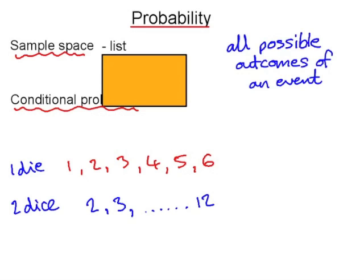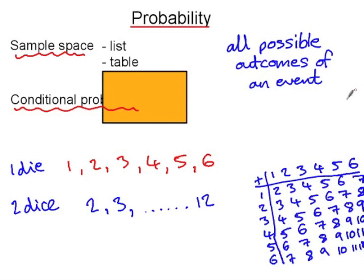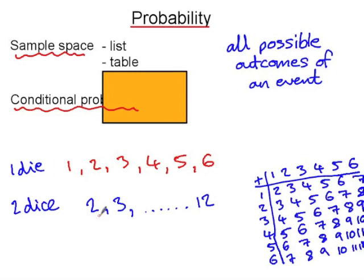A more efficient way of representing this would be to use a table where you've got the numbers on one die and the numbers on the other die, and then you add them up like an addition table. Another problem with a list in this case is when you roll two dice and add them up, you can get totals from between 2 and 12. But they're not equally likely.